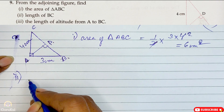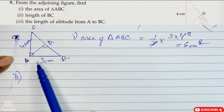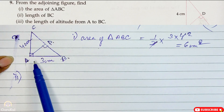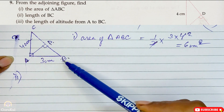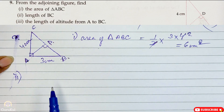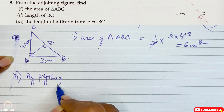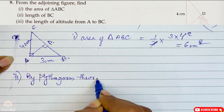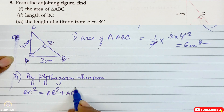Now the second part of the question, we need to find the length of BC. At present, forget the altitude. Just see that this is a triangle ABC where angle A is 90 degrees, and the base and height are mentioned. That means we need to find the longest side of the given triangle, which is just opposite 90 degrees. That means here we will apply Pythagoras theorem. By Pythagoras theorem, BC² = AB² + AC².